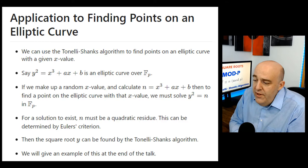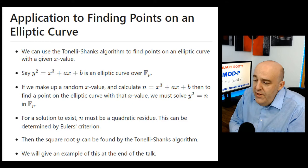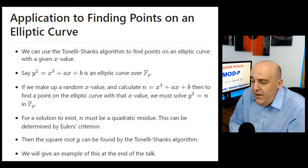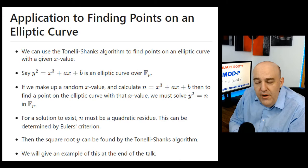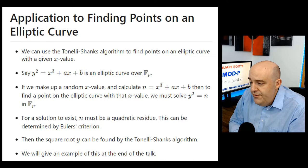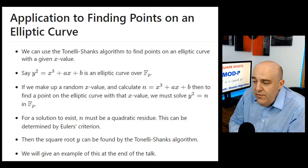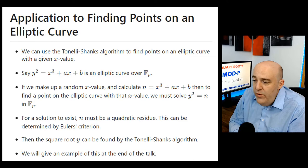To end the talk, we'll show a little application of where this can be used. We can use this to find points on an elliptic curve. Given a curve y squared equals x cubed plus ax plus b over fp, if we pick a random x value and plug it in to get n, then to find a corresponding y value we need to solve y squared equals n in fp — exactly the square root problem. If Euler's criterion tells us n is not a quadratic residue, there's no point with that x value; but if n is a quadratic residue, Tonelli-Shanks gives us y.